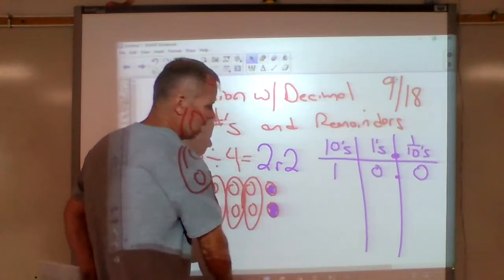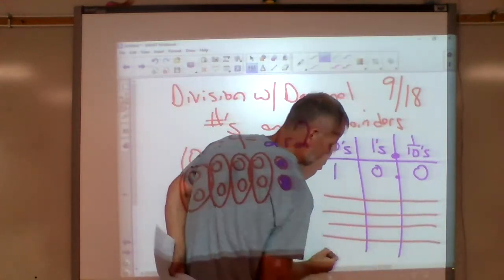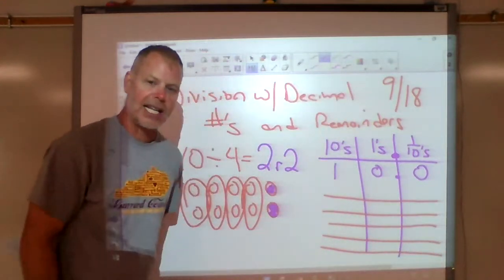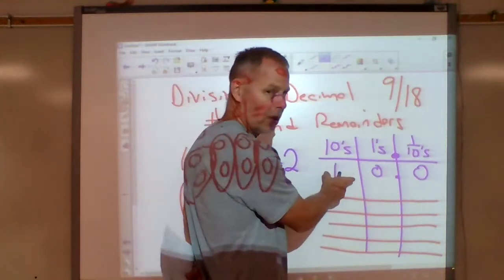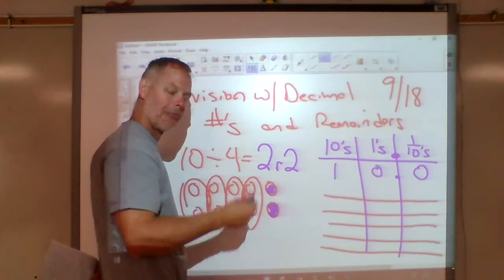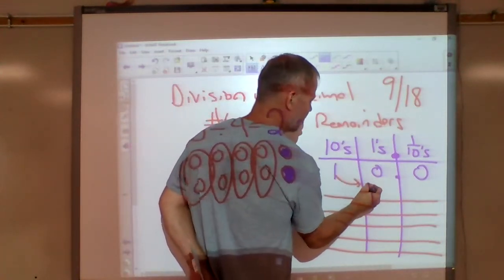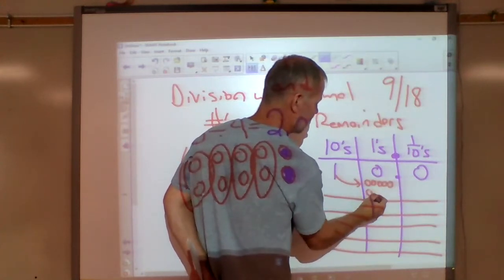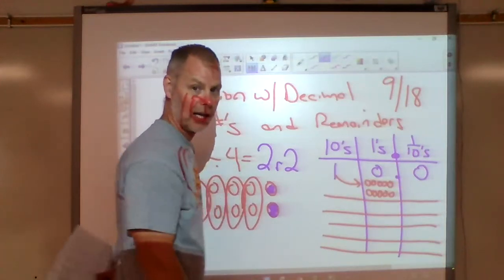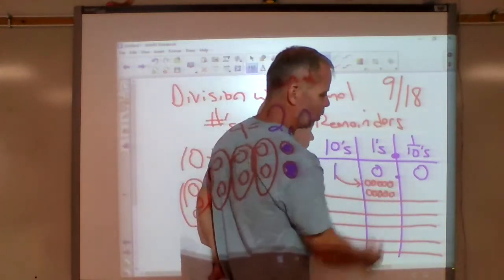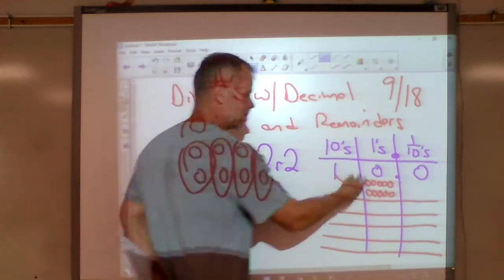We need to make these four equal groups, right? That one ten I cannot put here — I've only got one ten, there's not much I can do with that. But what I can do is exchange that one ten for ten ones. This is like a ten dollar bill that I'm exchanging for ten one dollar bills — the same value.